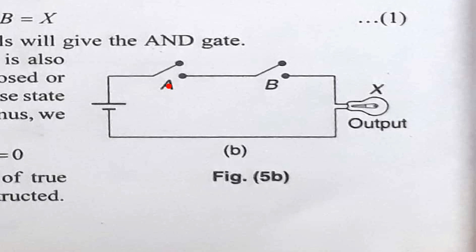Now, if A is equal to 1 and B is equal to 0 — that is A is closed and B is opened — current is not able to pass through the circuit because B is kept open. So the bulb does not glow, output is 0. So if A is 1 and B is equal to 0, then output will also be 0.